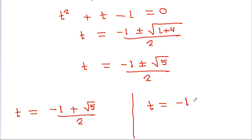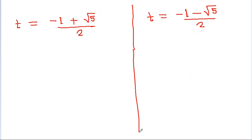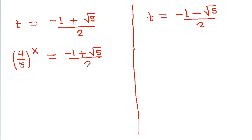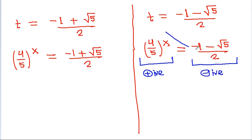So t is equal to minus 1 minus square root of 5 by 2. But since 4 by 5 power x is positive, and minus 1 minus square root of 5 by 2 is negative, this solution is not possible.